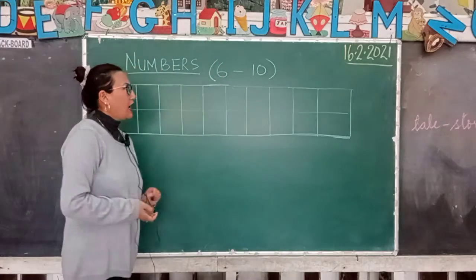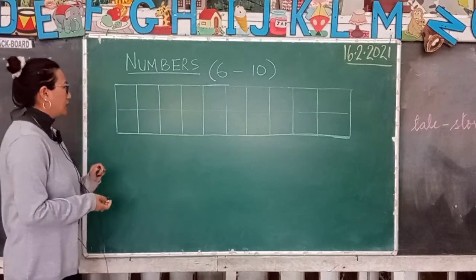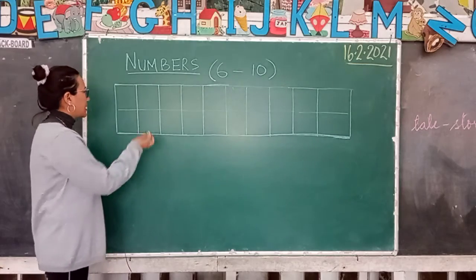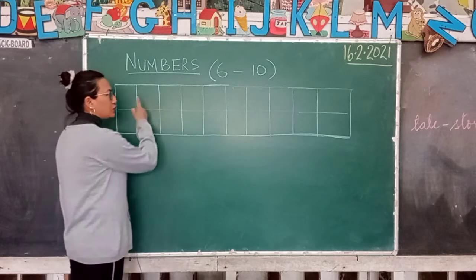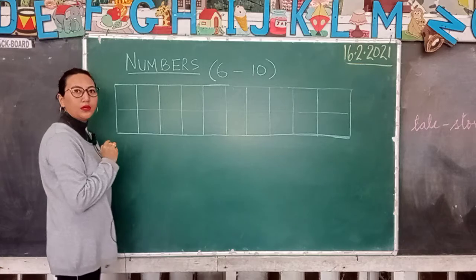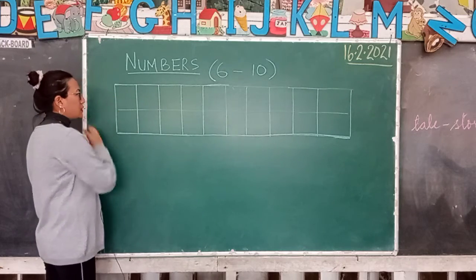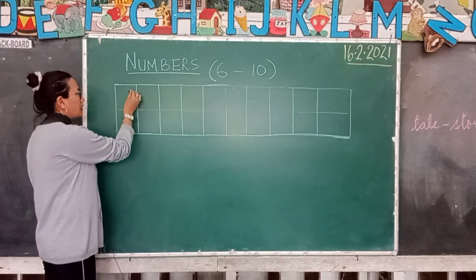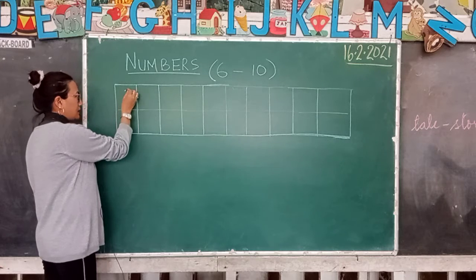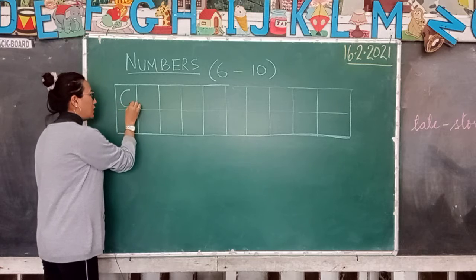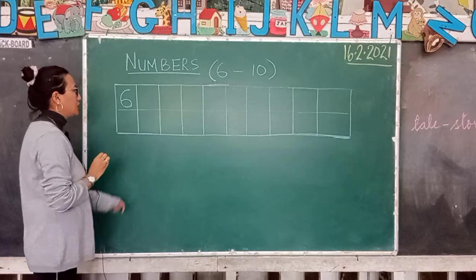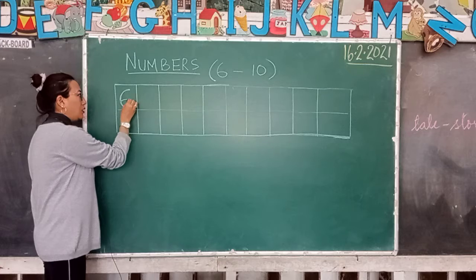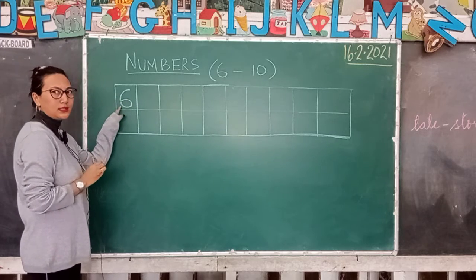First I will teach you how to write the numbers. After 5 comes number 6. I have already told you to use the square-shaped notebook. Now I'll tell you how to write number 6: a big right curve and a small curve — this is your number 6.